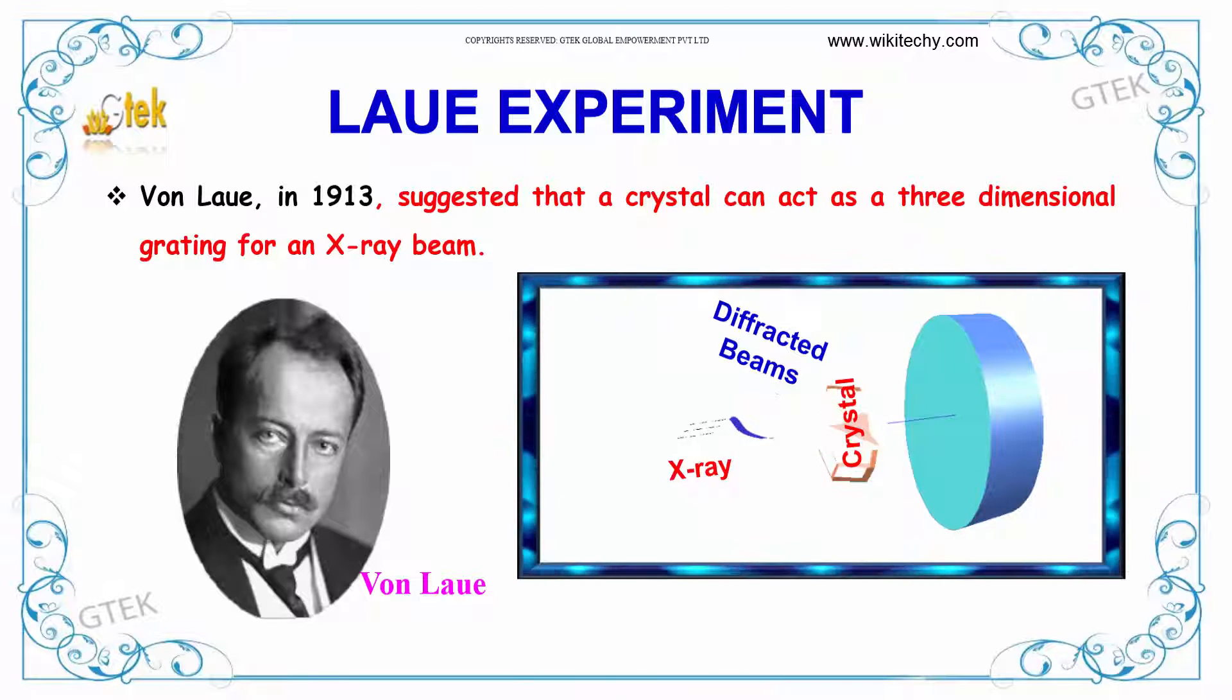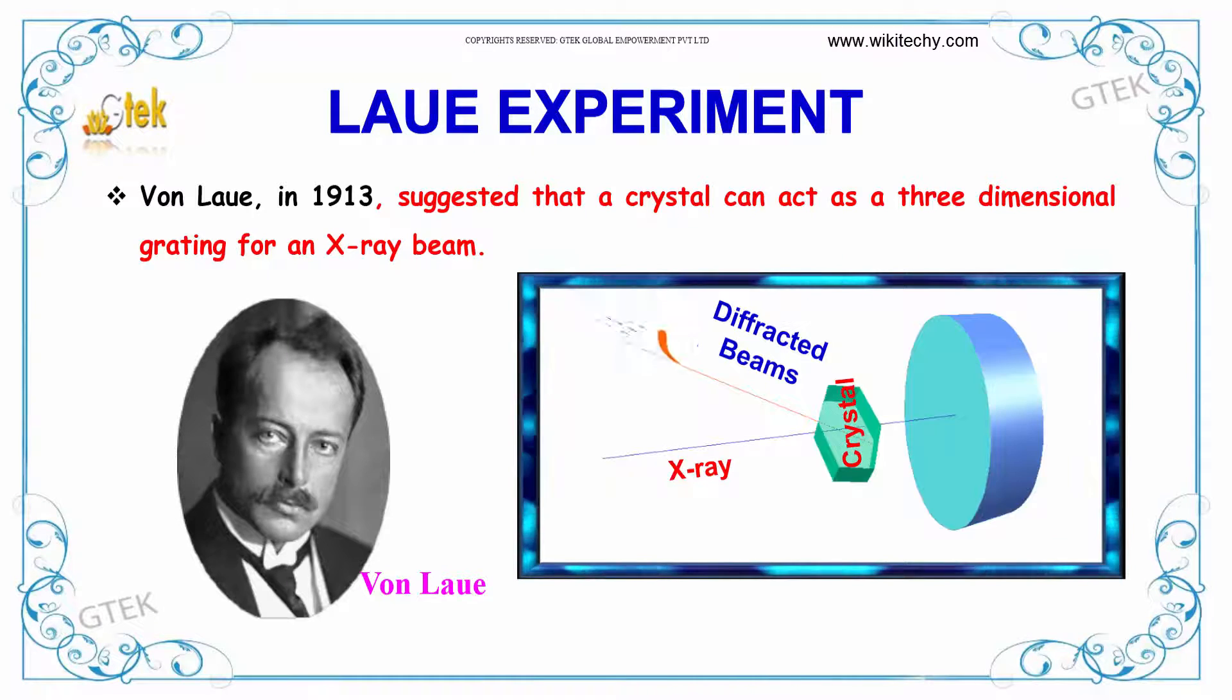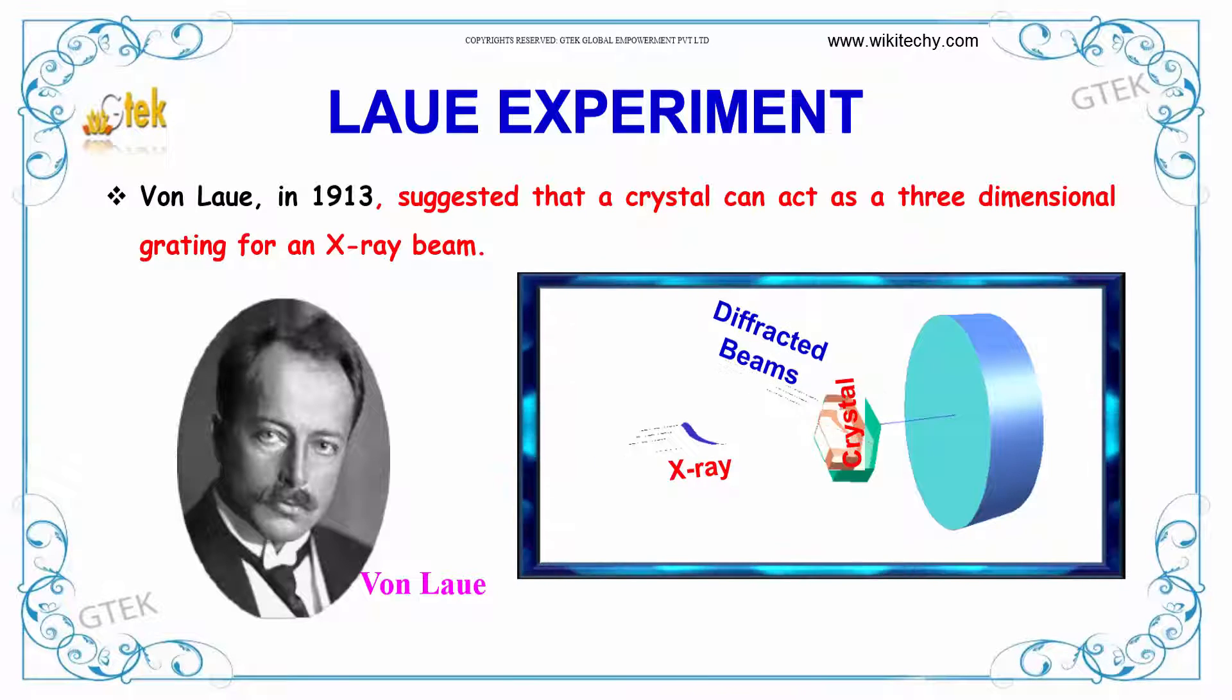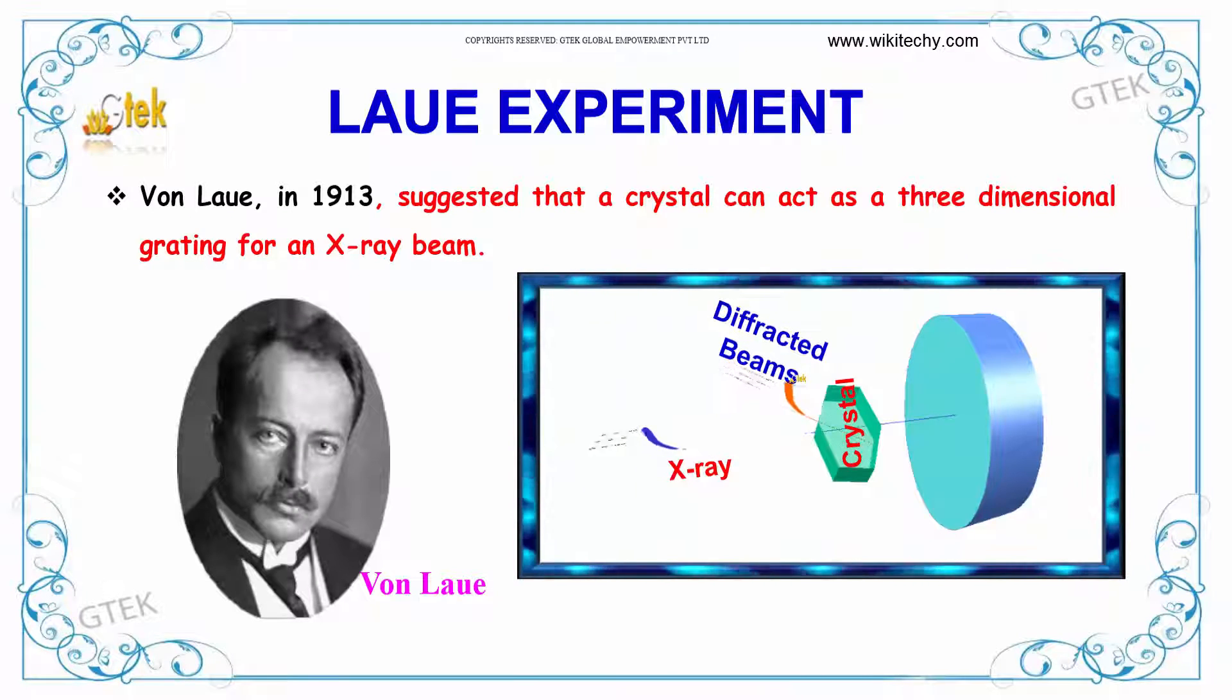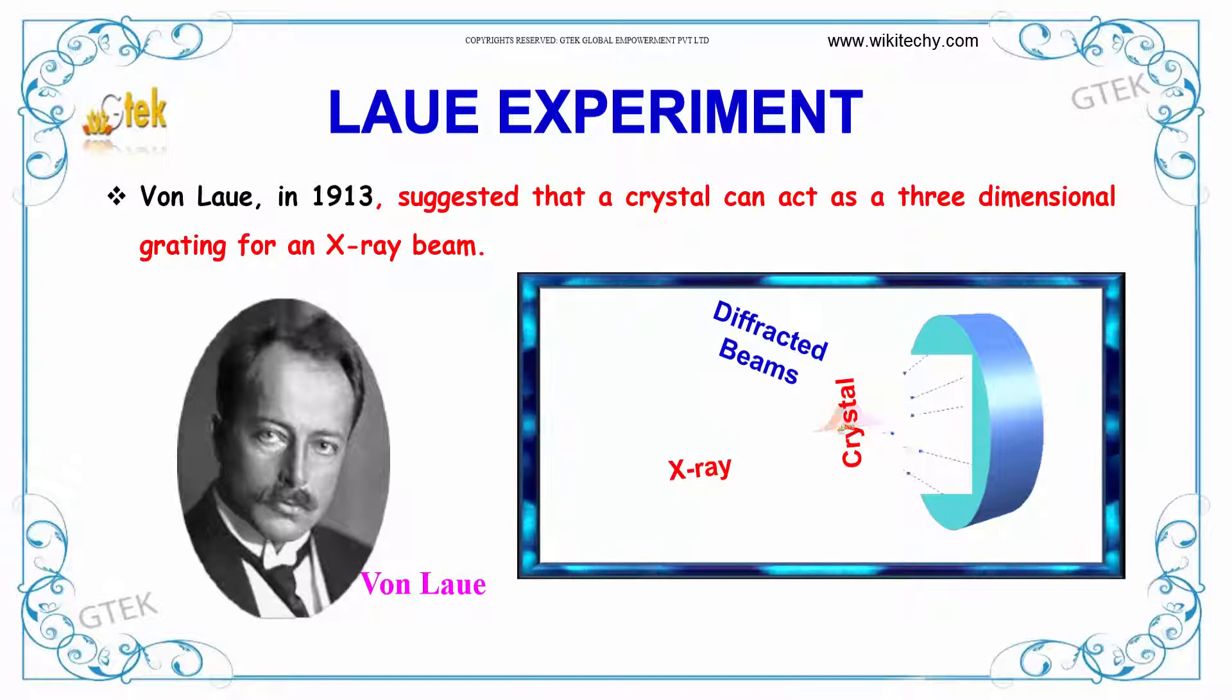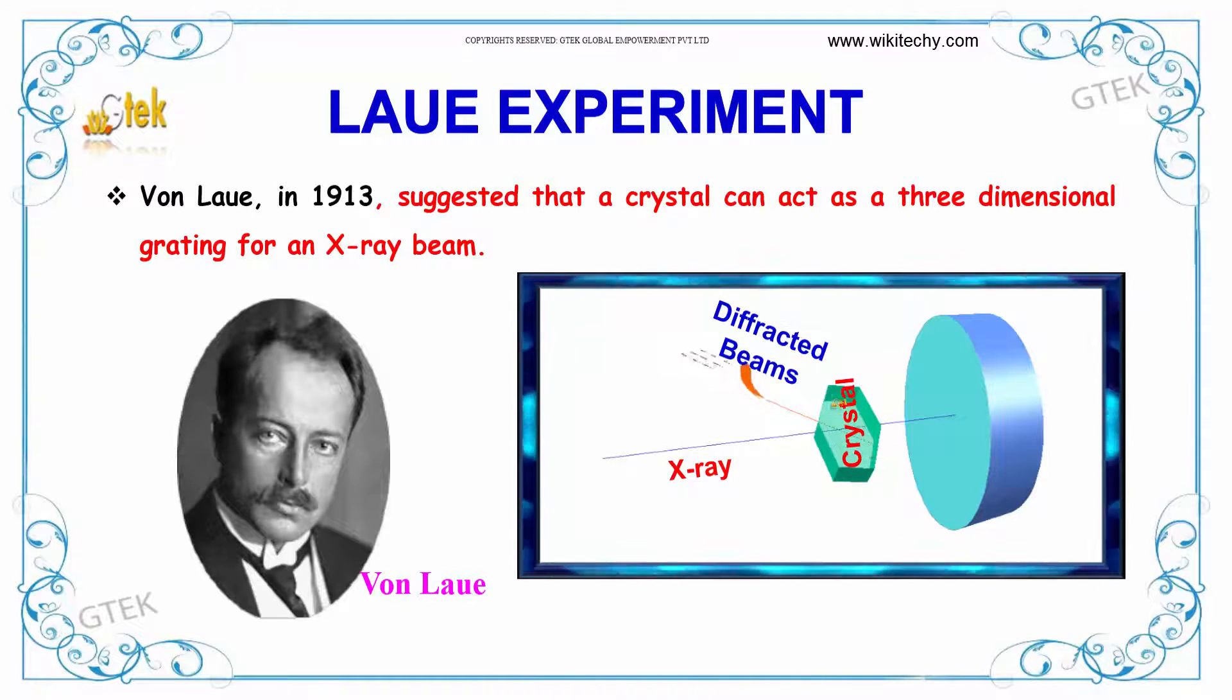Von Laue, in 1913, made many experiments, referred to as the Laue experiment. He suggested that a crystal can act as a three-dimensional grating for an X-ray beam.